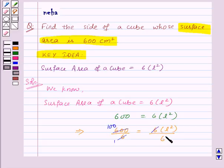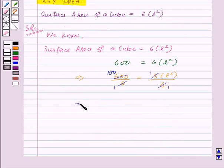And on right hand side, 6 and 6 will get cancelled. So this gives us 100 equal to L square.